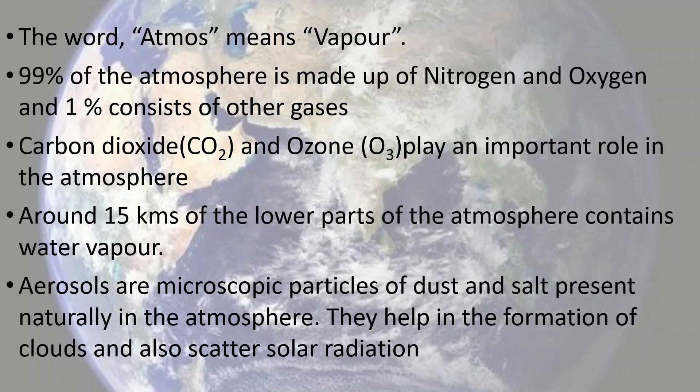How does the word atmosphere come about? It is derived from two words: atmos and sphere. Atmos means vapor. Initially, scientists did not know the exact composition of air around us. They thought it was just various vapors, like water vapor, so they coined the term atmos meaning vapor. Later on, they came to know what the different gases were.